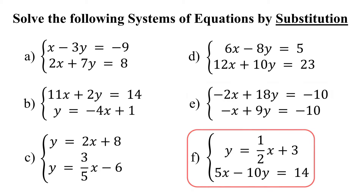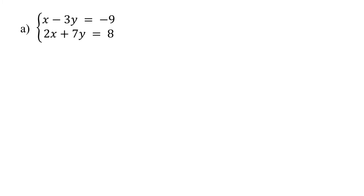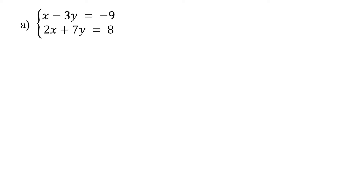The first step in solving a system of equations using the substitution method is to isolate either the x or y variable in one of the equations. We can choose either equation, but we will try to make a choice that keeps the work easy.